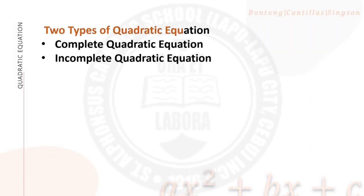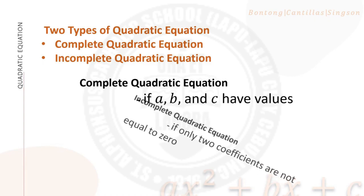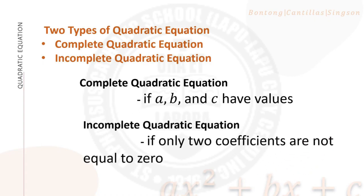There are two types of quadratic equation: complete quadratic equation and incomplete quadratic equation. A complete quadratic equation is one where a, b, and c all have values — that is, all three are present. An incomplete quadratic equation is one where only 2 out of 3 coefficients are present, or in other words, are not equal to 0.